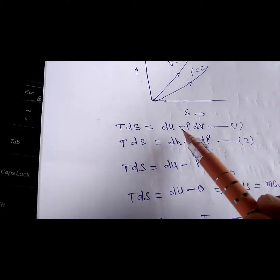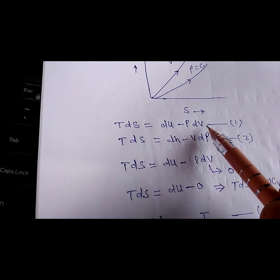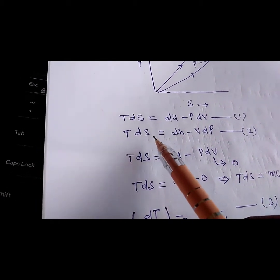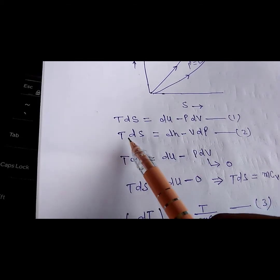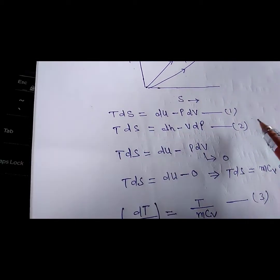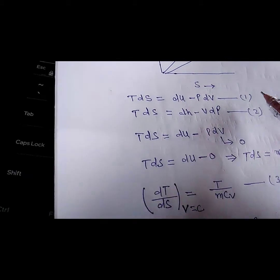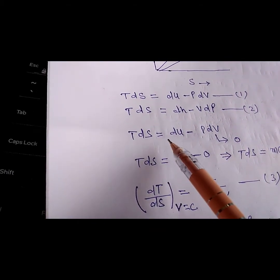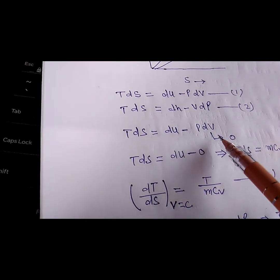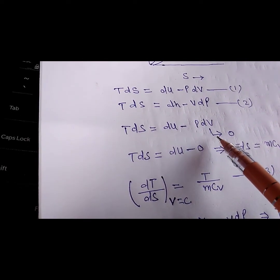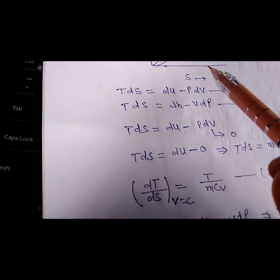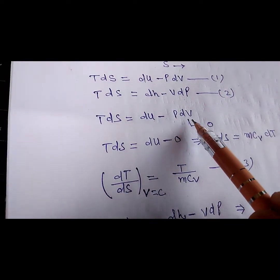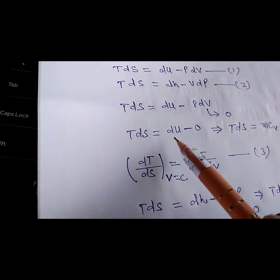The first TDS equation is: TdS = dU + P·dV. This equation is in the form of internal energy and change in volume. The second TDS equation in the form of enthalpy is: TdS = dH − V·dP. Taking the first TDS equation for the constant volume line — when volume is constant, dV = 0, so TdS = dU.